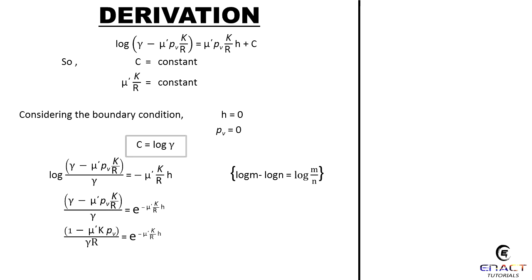Then, log(γ - μ'pVK/R) = μ'pVK/R·h + C. So, C = constant, μ'K/R = constant. Considering the boundary condition h = 0 and pV = 0, then C = log γ.